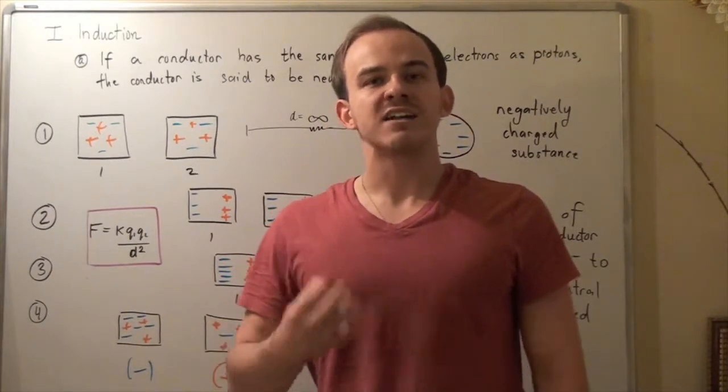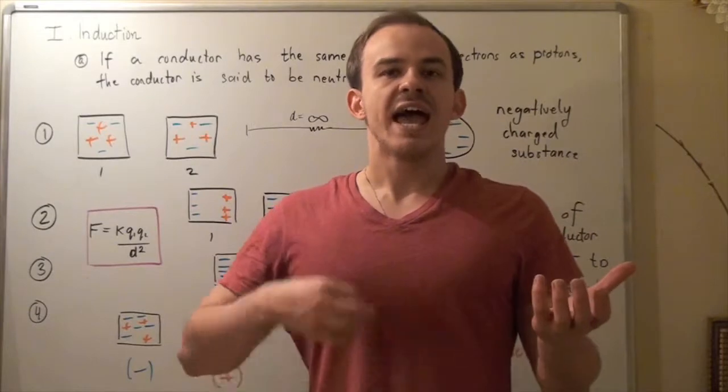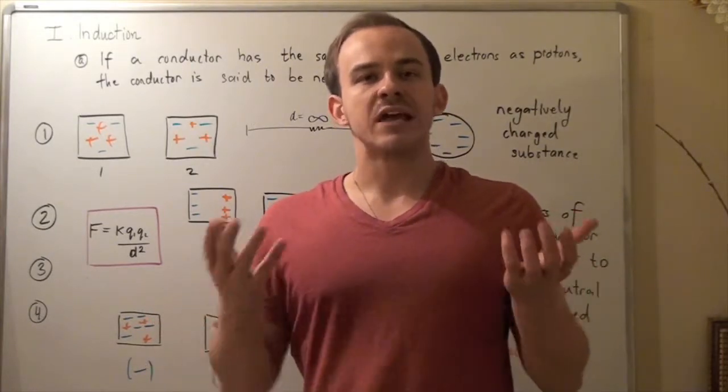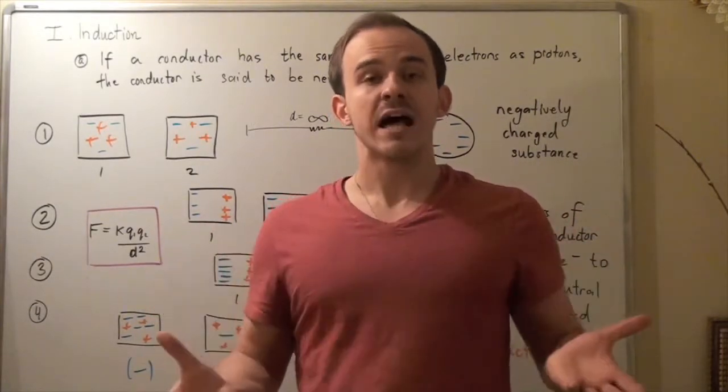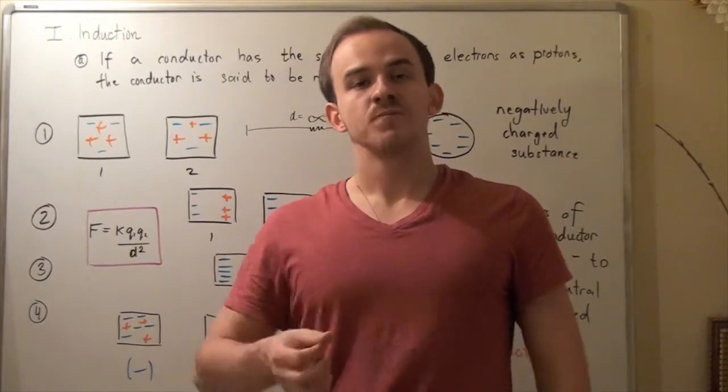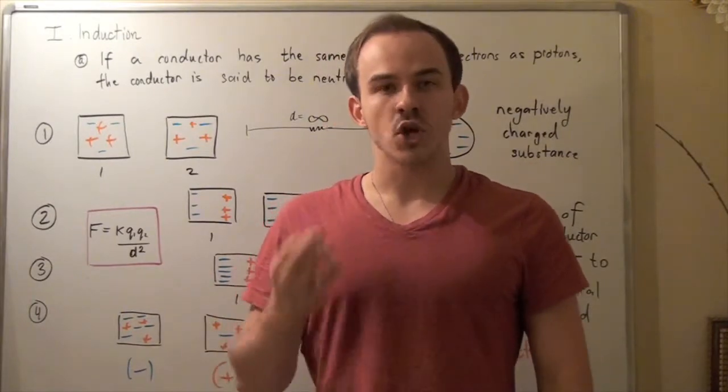That's because if I add up the charges due to protons and the charges due to electrons, they will completely balance and cancel out. So I will get a conductor with a neutral or zero charge.